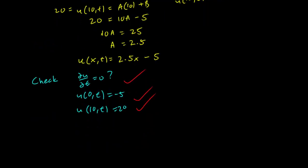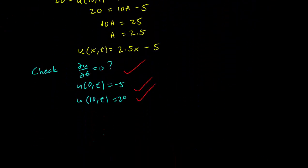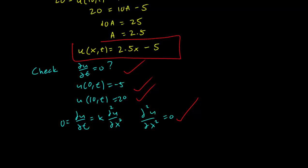And lastly, let's check if we actually satisfy the heat equation. So we need to solve ∂u/∂t equals k ∂²u/∂x². But again, ∂u/∂t equals 0. So we end up just having to solve ∂²u/∂x² equals 0. And we see that 2.5x minus 5 is only a linear equation. So if we differentiate it twice with respect to x, we do get 0. So this also works. We can conclude that our solution, u(x,t) equals 2.5x minus 5, is indeed the correct solution for this problem.